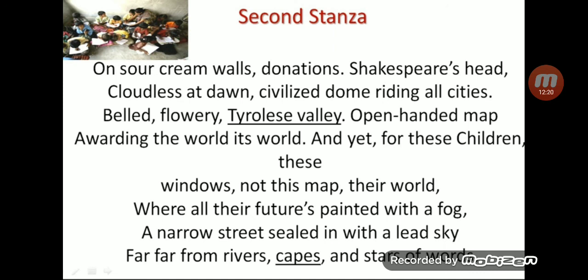Finally, 'far far from rivers, capes, and stars' also introduces a new figure of speech — paradox. It is a seemingly absurd statement with a deep hidden meaning: rivers, capes, and stars represent places and things unreachable to slum children living in filth. The stars in the sky cannot be reached from earth — a deep meaning is hidden here. So this concludes the analysis of the first two stanzas; the next two paragraphs will be covered in the next video.